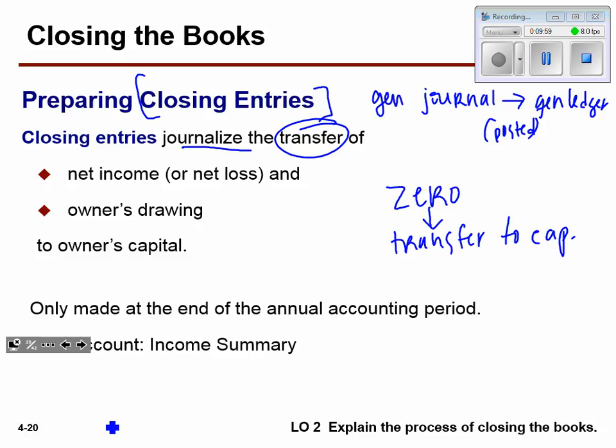So we're transferring everything we did in revenue and expenses — which equal net income or loss — and we take a look at the drawing, and say: owner's capital, here's what you're ending with. And owner's capital is not zeroed out — it's a permanent account. When is this done? At the end of the accounting period.